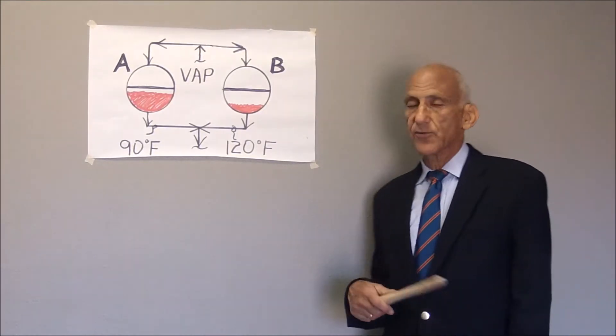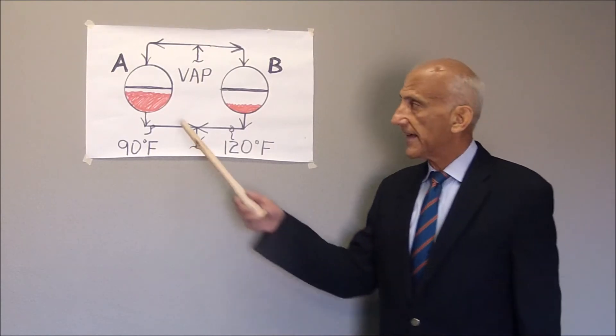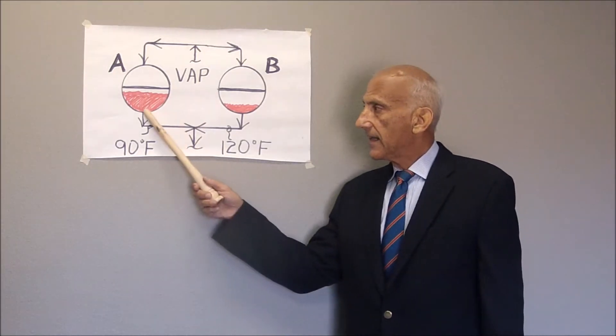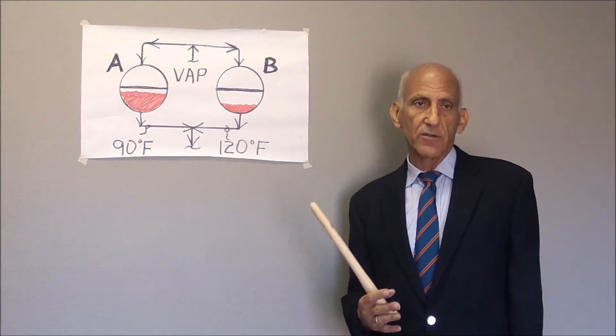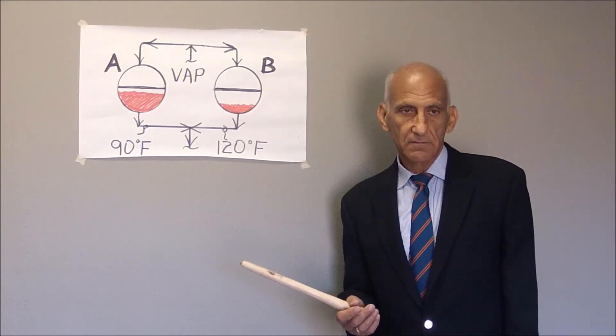But let's presume there's some obstruction in the outlet from condenser A. As the liquid flows across that obstruction, it undergoes a small pressure drop, a tenth of a pound.